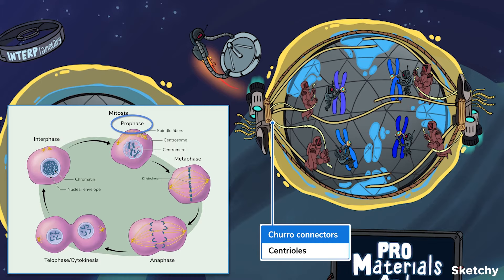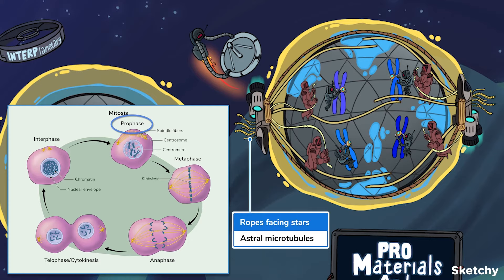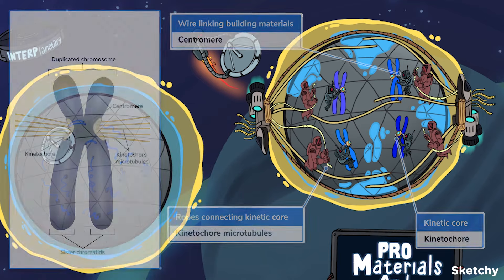spindle fibers extend from the centrioles and help assemble the spindle apparatus. There are three kinds of spindle fibers, or microtubules. Polar microtubules extend from the centrosomes and overlap each other at the center. They help move the spindle apparatus apart during mitosis. Astral microtubules extend from the centrosomes to the cell membrane. To remember astral microtubules, we drew these ropes facing the stars.